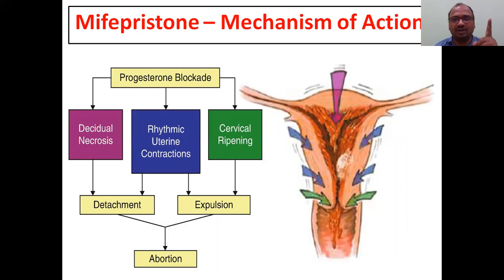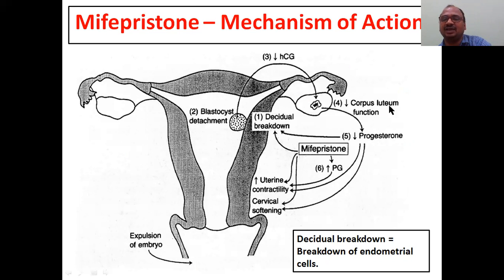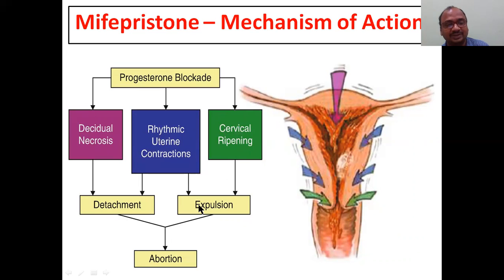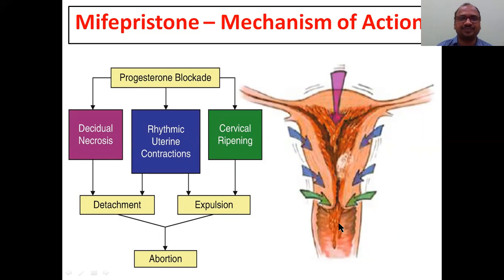When progesterone is completely blocked, the results are: first, decidual necrosis (endometrium necrosis); second, rhythmic uterine contractions; third, cervical ripening. This leads to expulsion of the embryo, detachment of the zygote, and ultimately abortion. The uterus contracts and the zygote is expelled in this manner.